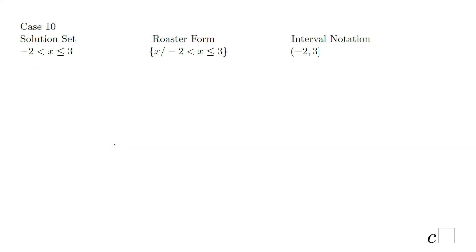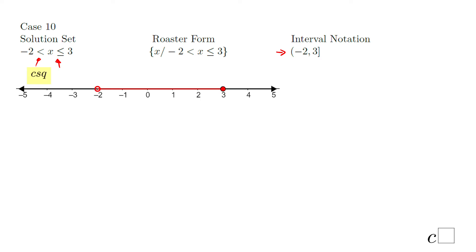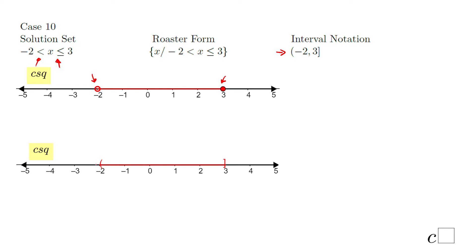Case ten, very similar to case nine. The difference: now we have the equal sign at 3, no equal at negative 2. So: negative 2 less than x, less or equals 3. The interval notation: parenthesis at negative 2 because there is no equal, comma, 3, bracket. Graphically: empty dot at negative 2, full dot at 3, shaded between. The second way uses a parenthesis at negative 2 and a bracket at 3.